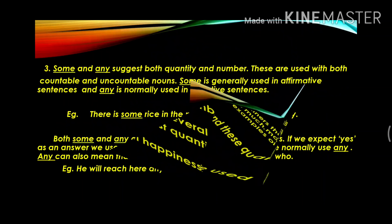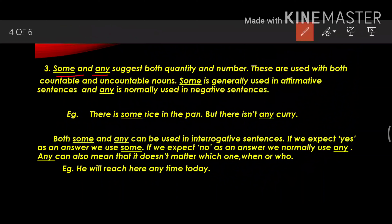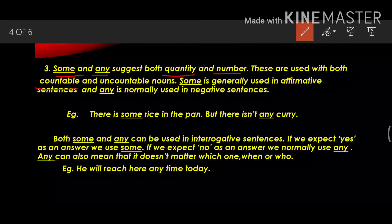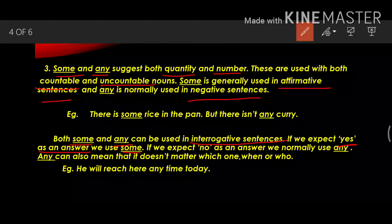Next quantifiers are some and any. These suggest both quantity and number and are used with both countable and uncountable nouns. Some is generally used in affirmative sentences and any is normally used in negative sentences. Example: there is some rice in the pan but there isn't any curry. Both some and any can be used in interrogative sentences also. If we expect yes as an answer, we use some, but if we expect no as an answer, we normally use any.